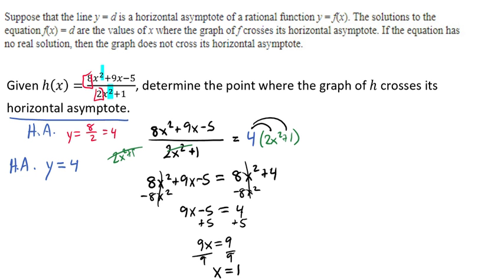So what it's saying is that the function is going to cross the horizontal asymptote at 1, 4. So it's going to cross the horizontal asymptote at the point (1, 4).